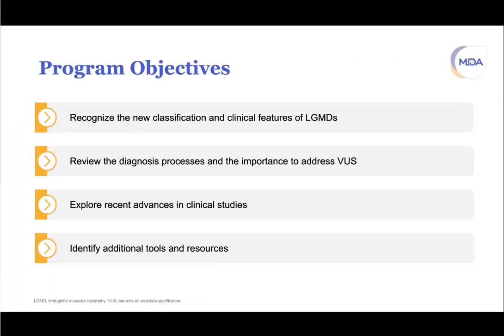Program objectives are to recognize the new classification and clinical features of limb girdle muscular dystrophy, review the diagnostic process and how to resolve variants of uncertain significance (VUSs), explore recent advances in clinical studies, and show additional tools and resources to help with diagnosis and VUS resolution.